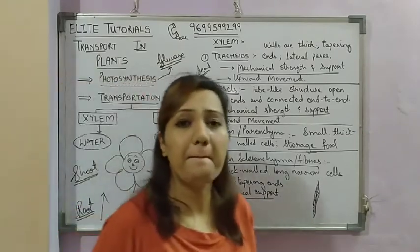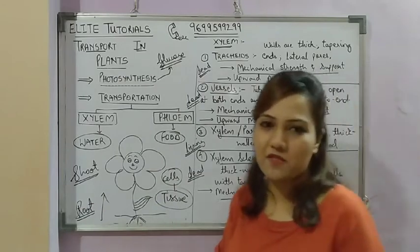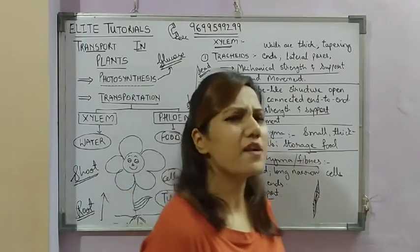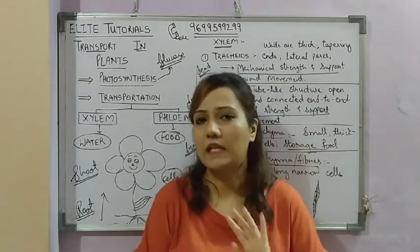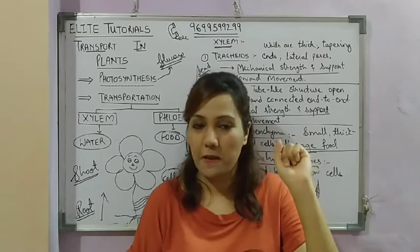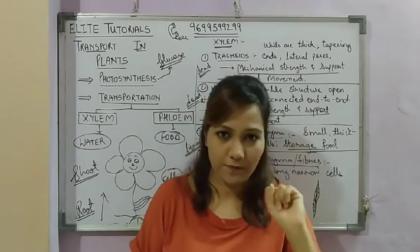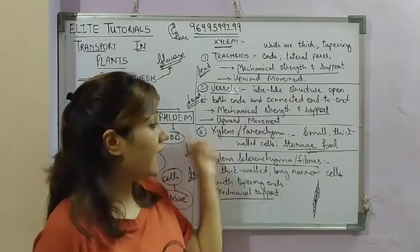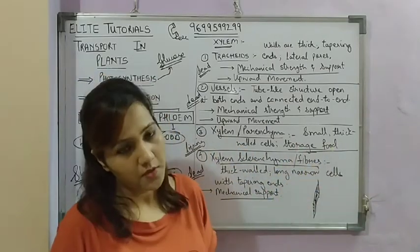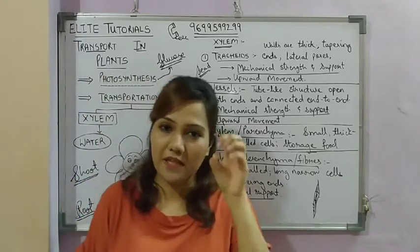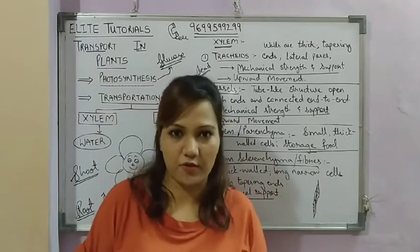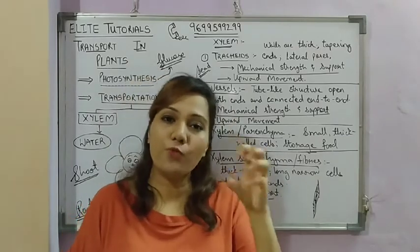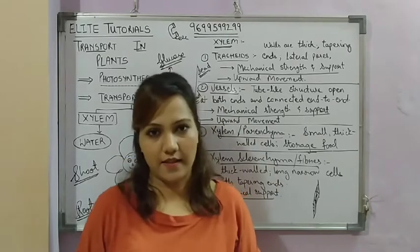The third cell type is xylem parenchyma. Parenchyma is a very common tissue found in almost all parts of the plant. Its main function is food storage. It consists of small, thick-walled cells. For example, the fleshy part of a potato that we eat is made of parenchymatous cells — that fleshy part is the plant storing food, which we then consume.